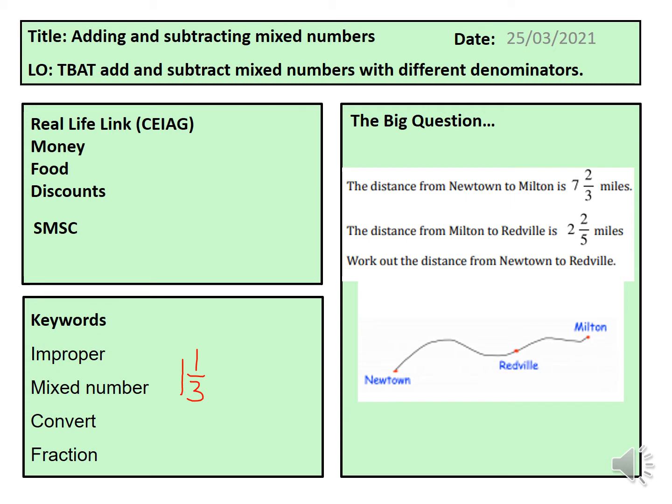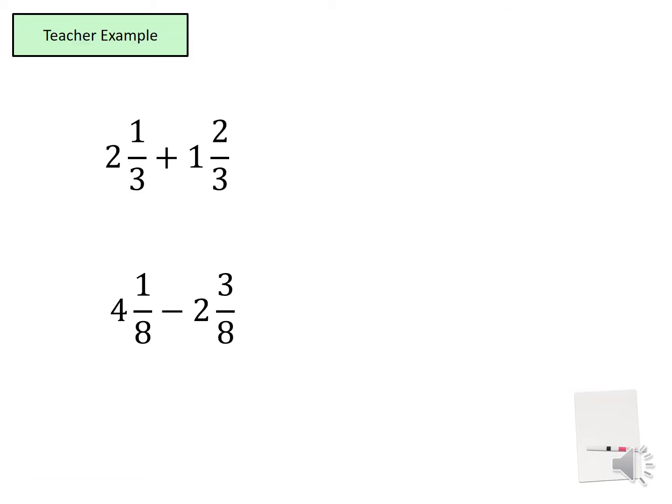The real-life link is in money, food, and discounts — so calculating fractions of a map, for example, using it to distribute money and get discounts when you go shopping. I'm going to go through a couple of examples first, and then you're going to have a go at some yourself.